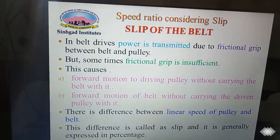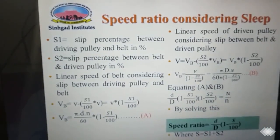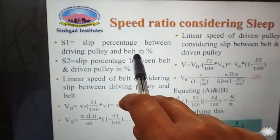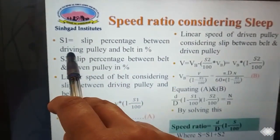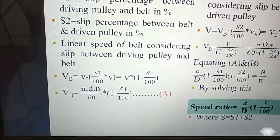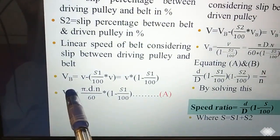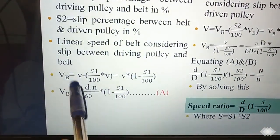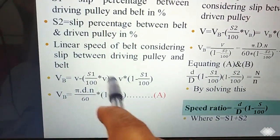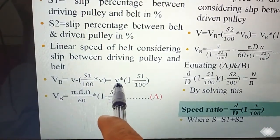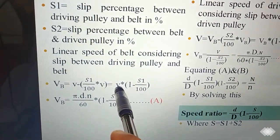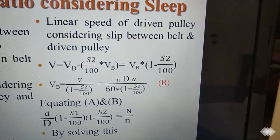Slip is generally expressed as a percentage. Here s1 and s2 are slip percentages: s1 is the slip percentage between the driving pulley and the belt, and s2 is the slip percentage between the belt and the driven pulley. The linear speed of the belt equals v minus (s1/100)·v, which gives v·(1 − s1/100), where v equals pi·d·n/60 into bracket (1 − s1/100).